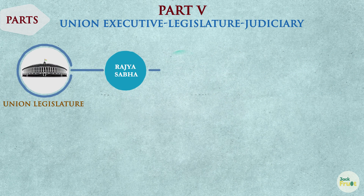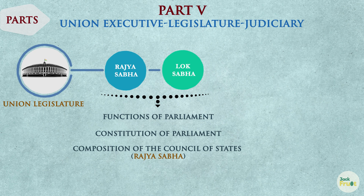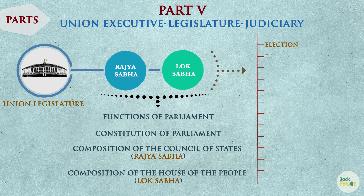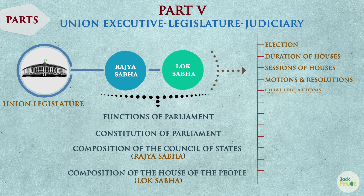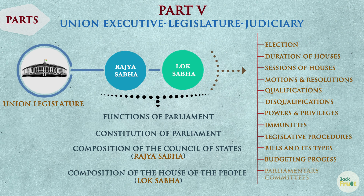Under the Union Legislature, the functions of Parliament, Constitution of Parliament, composition of the Council of States i.e. Rajya Sabha, and composition of the House of the People i.e. Lok Sabha are described. Further under this section, method of election to the Lok Sabha and Rajya Sabha, duration of Houses of Parliament, sessions of Parliament, motions and resolutions, qualifications for membership of Parliament, disqualifications, powers, privileges and immunities of Parliament and its members, legislative procedures, bills and their types, budgeting process, and parliamentary committees are all discussed in this part of the Constitution.